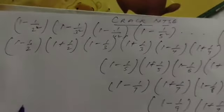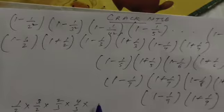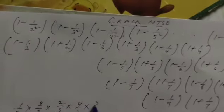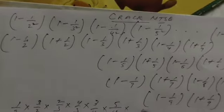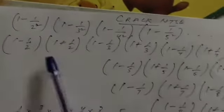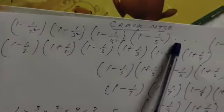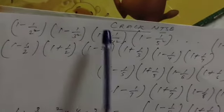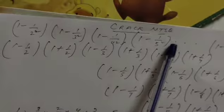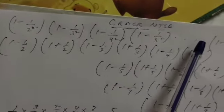This becomes 1/2 times 3/2 times 2/3 times 4/3 times 3/4 times 5/4. Now let me explain how many times each appears - one, two, three, four, the sixth term, seventh term, eighth term.